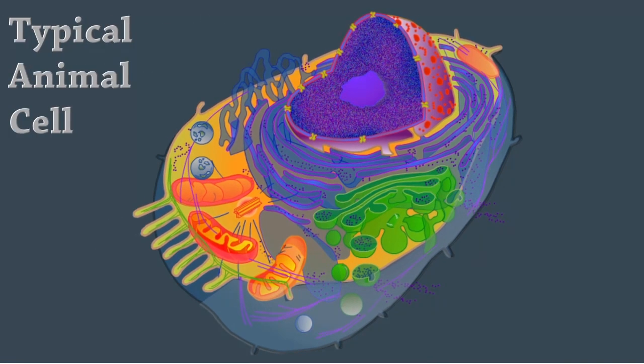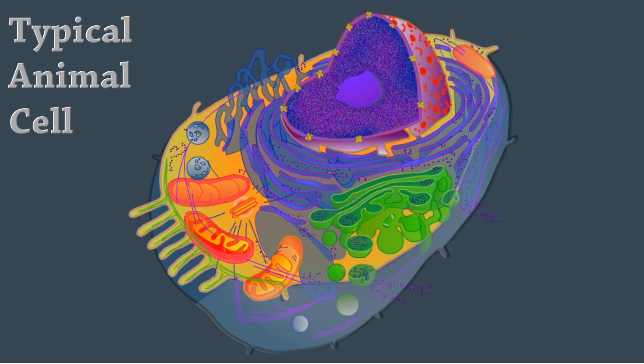Today, we've reviewed the parts of the animal cell and the function of organelles. You've completed a typical animal cell.